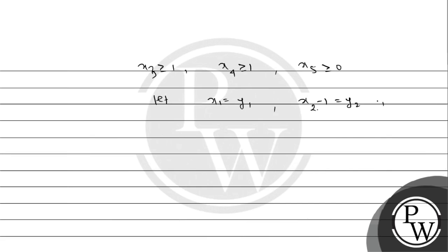Now we substitute: let y2 = x2 minus 1, y3 = x3 minus 1, y4 = x4 minus 1, so that y1, y2, y3, y4, y5 are all greater than or equal to 0.